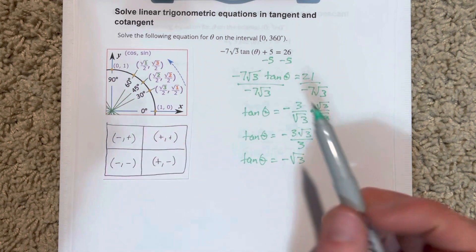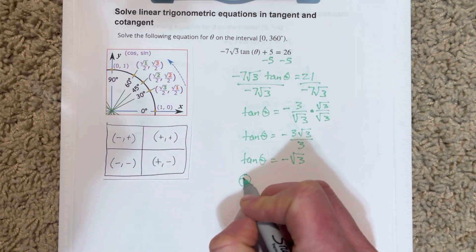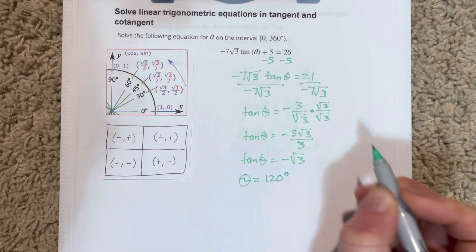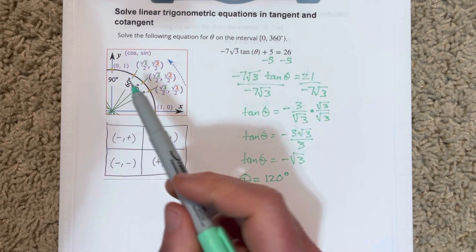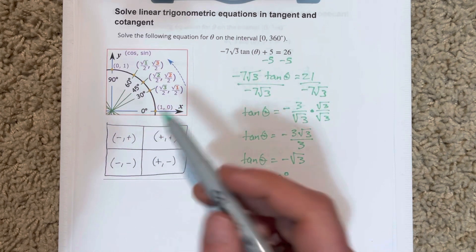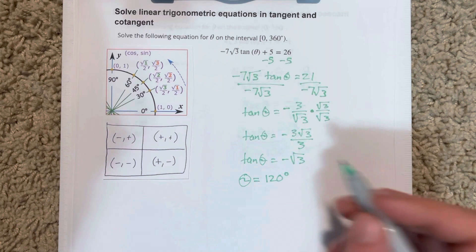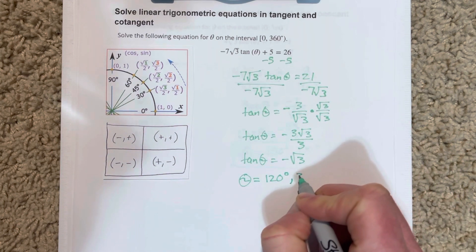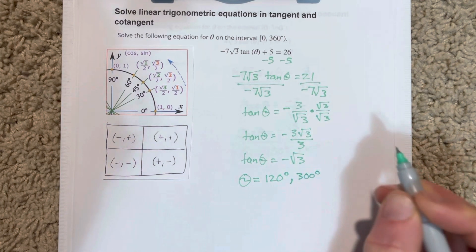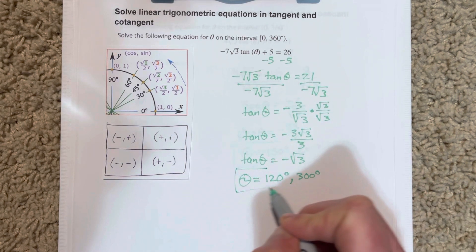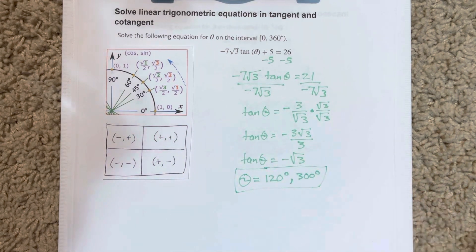60 degrees in quadrant 2 would be 120 degrees. And 60 degrees in quadrant 4 would be 300 degrees, because it would be 30 degrees past the y-axis. So these are the two spots where tangent is negative root 3.